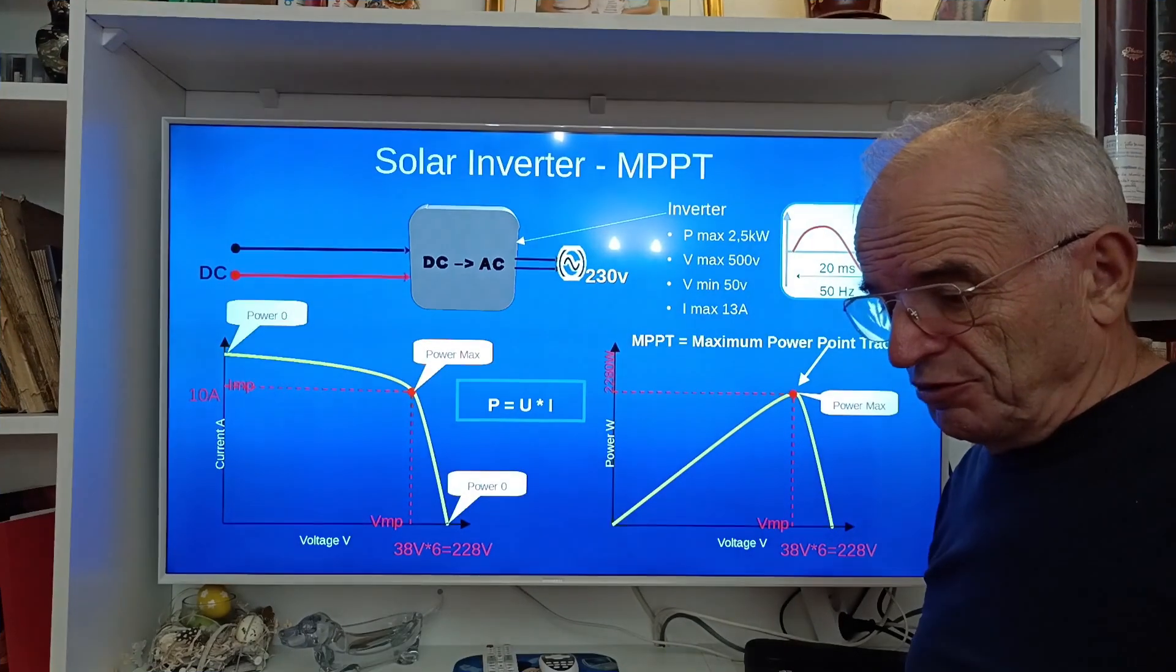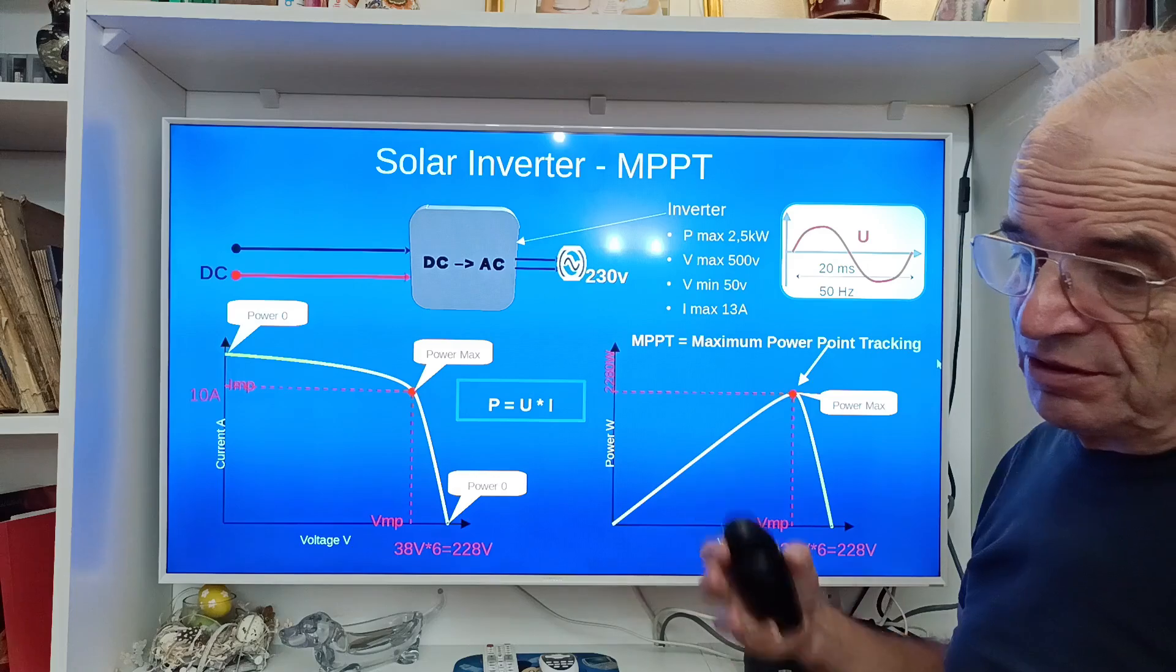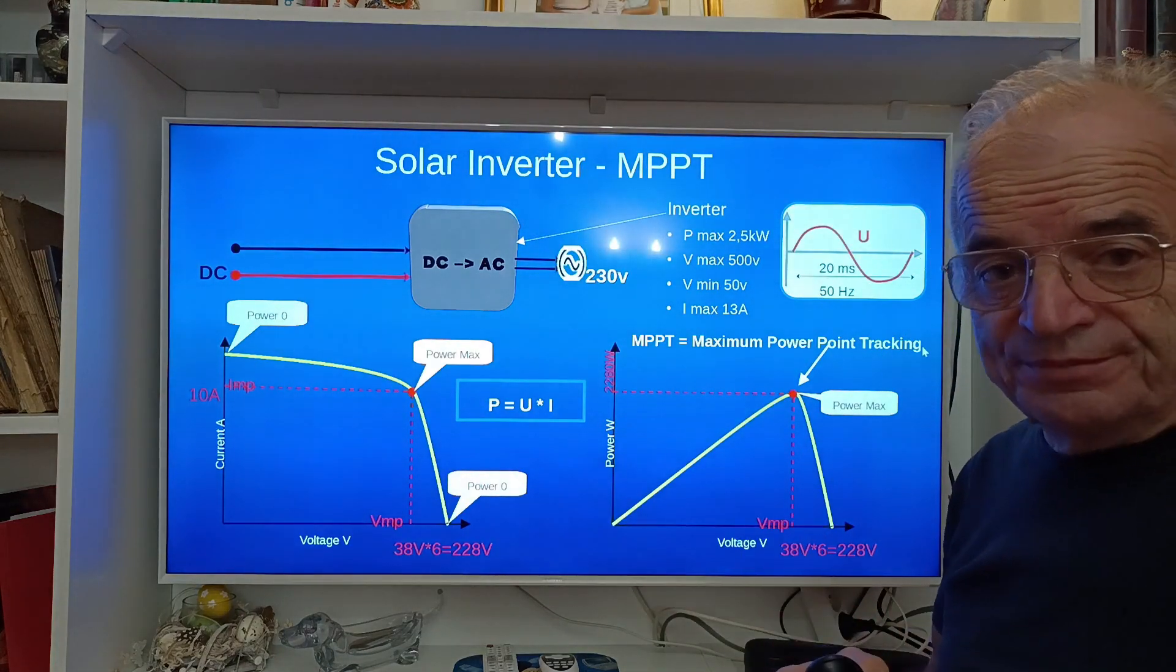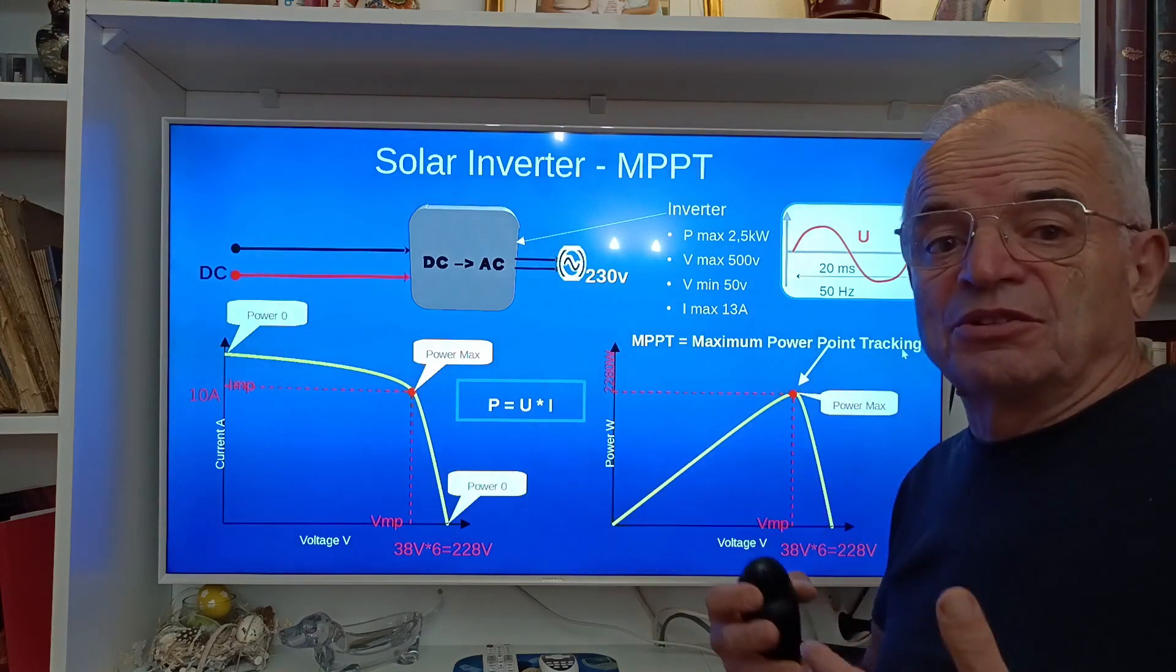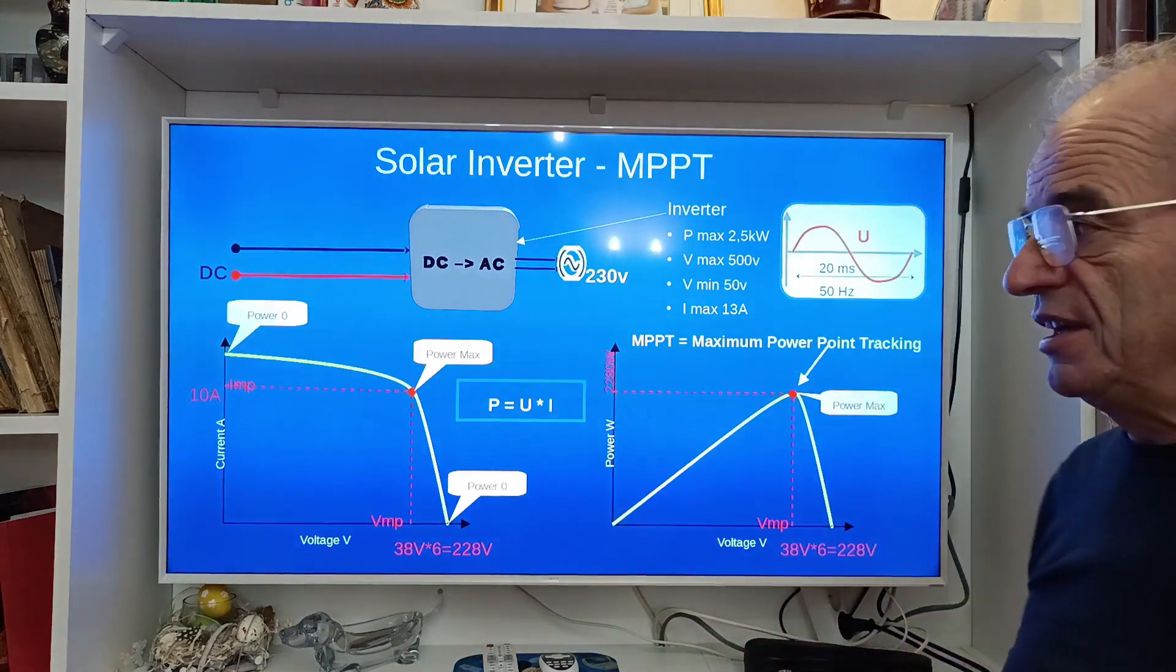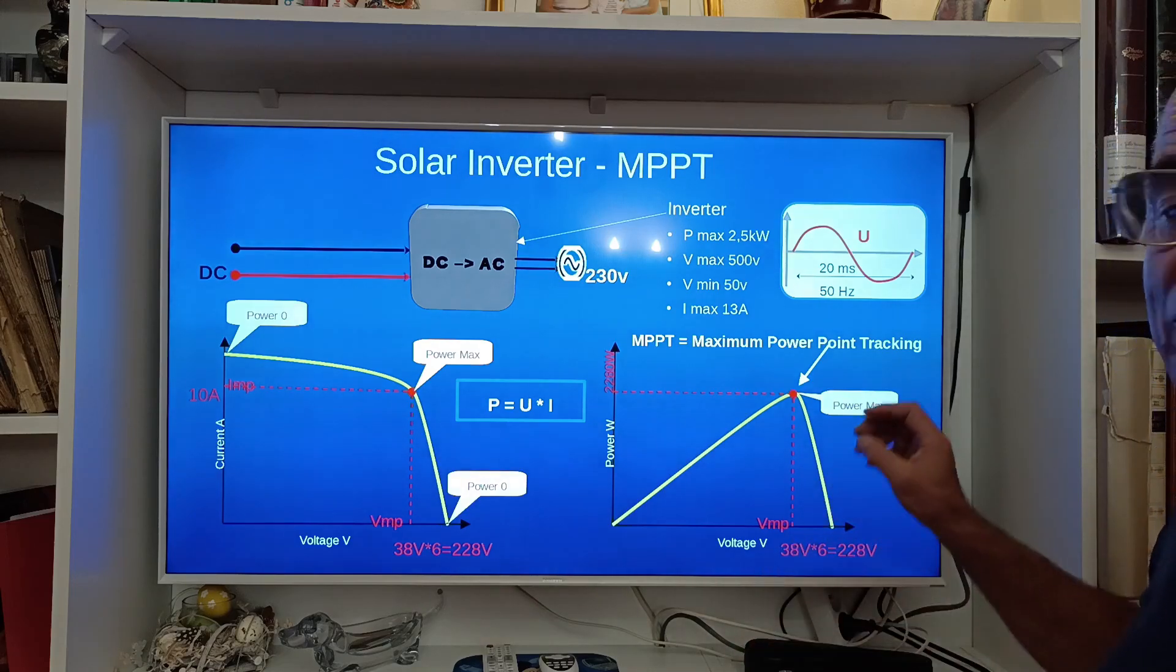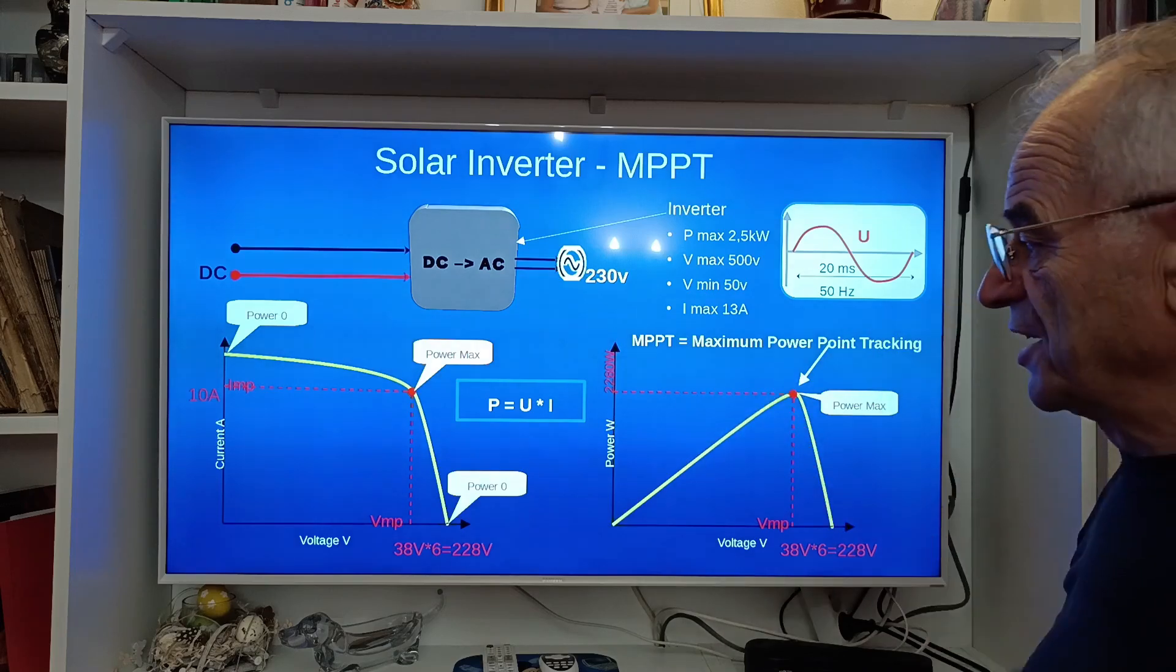So those two signals of two generators must be perfectly synchronized in frequency and phase. This is the second activity of the solar inverter, to find the frequency and phase of the grid and to synchronize to it.